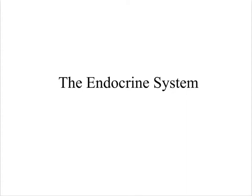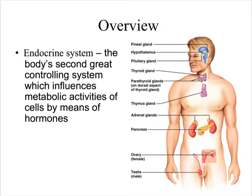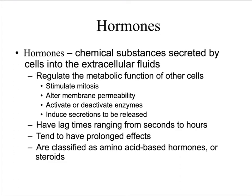We're going to be talking about the endocrine system. The endocrine system is basically the body's second great controlling system, outside of the nervous system. It has influence over your entire body — how it works and functions. It influences the metabolic activity of all the cells by hormones. Hormones are chemical substances secreted by the cells into the fluid, and they have a wide range of functions. They basically regulate the metabolic function of other cells, and they might stimulate mitosis.